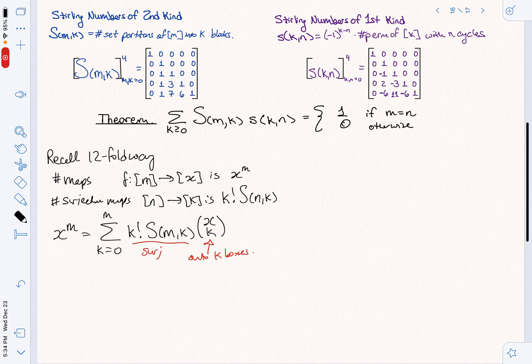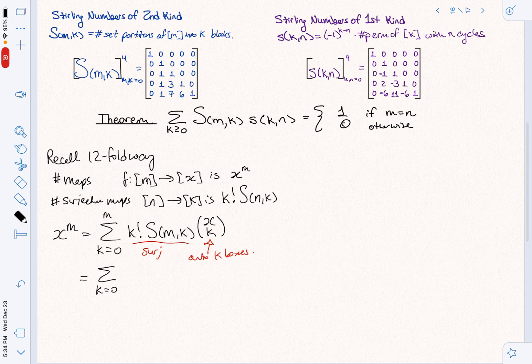So we can simplify this. This is going to be the sum from K equals 0 to M. And we can multiply the K factorial because X choose K is going to have a K factorial in the bottom. And what do we get? We get S(M,K) X falling factorial K. Why is that interesting?